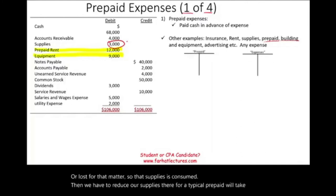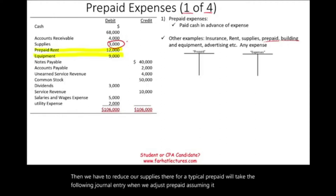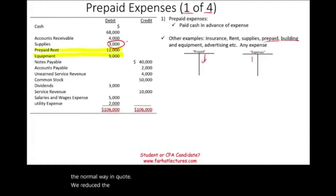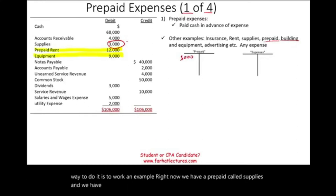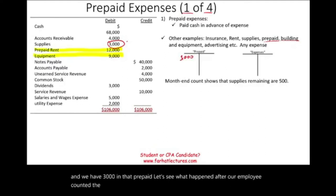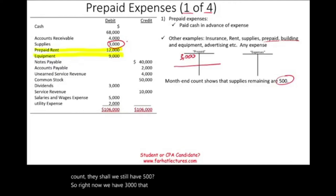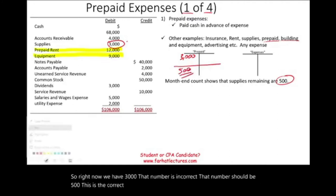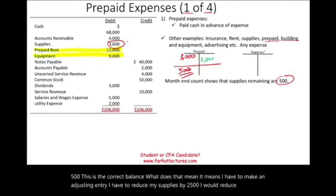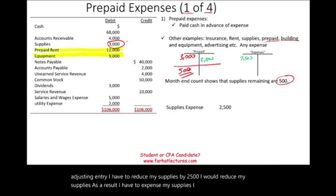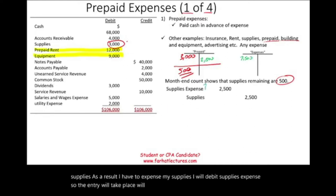A typical prepaid journal entry, assuming it was recorded as a prepaid initially, reduces the prepaid and increases the related expense. We have $3,000 in supplies. After the employee counted the supplies at month-end, they show we still have $500. So the current balance of $3,000 is incorrect — it should be $500. That means I have to make an adjusting entry: debit supplies expense $2,500, credit supplies $2,500. As a result, I have the proper balance of $500.